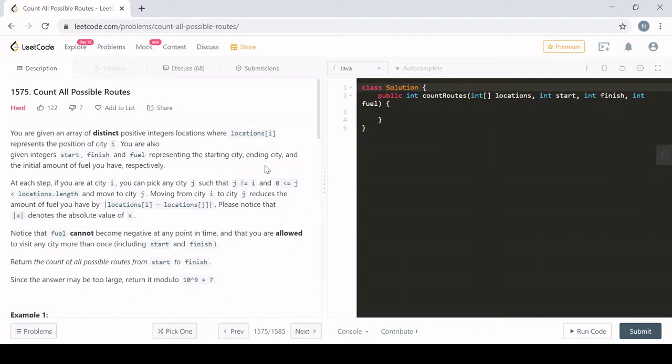The problem description says you are given an array of distinct positive integers where the locations at each index represent the position of a city at that index. We're also given three integers: start, finish, and fuel, representing the starting city, the ending city, and the initial amount of fuel we have.